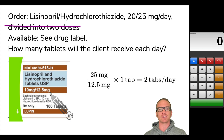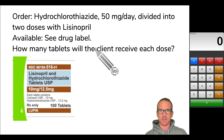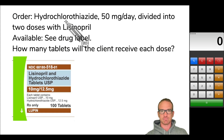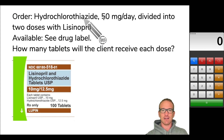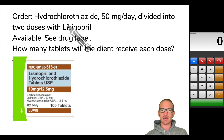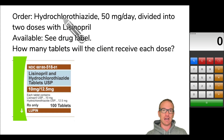Now let's look at that second example. When working with students in dose calc, every once in a while you'll see a drug label with two medications on it, but the order is only for one of them. This is where we have to be careful and make sure we're using the right strength. For example here: hydrochlorothiazide, 50 milligrams per day divided into two doses, with lisinopril. This means we're using both together, but the 50 milligrams per day refers specifically to the hydrochlorothiazide.